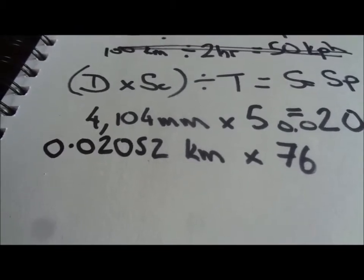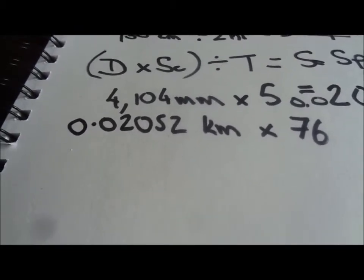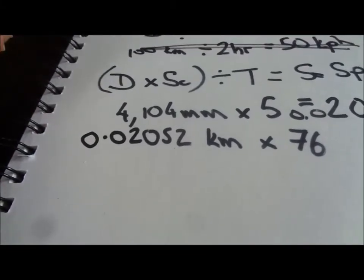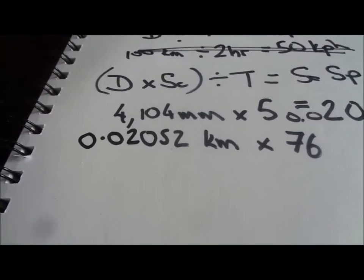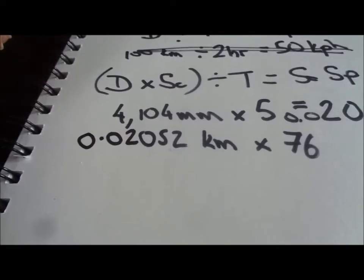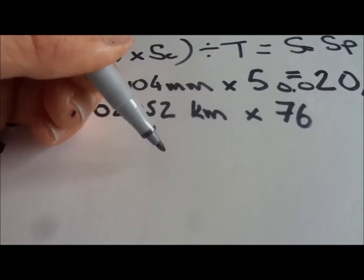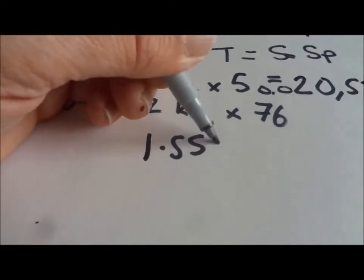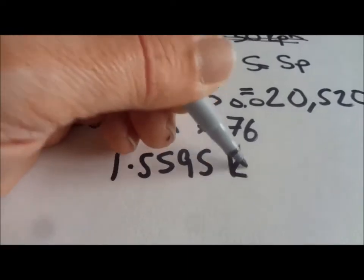I don't know, Archie, can you do that off the top of your head? Oh, I used to know my 76 times table. I think the answer's 1.5595. Actually, you're absolutely right, it is. 1.5595 kilometres.